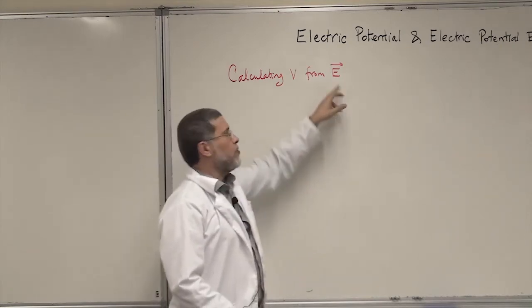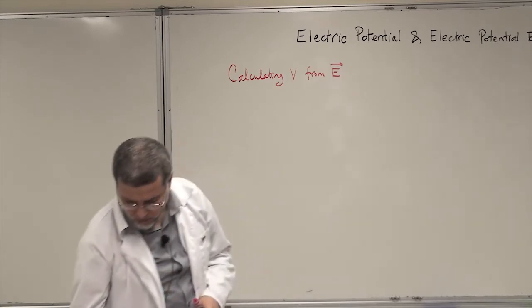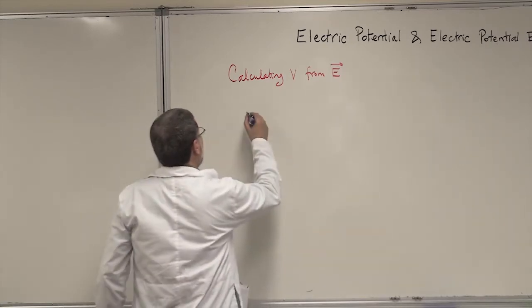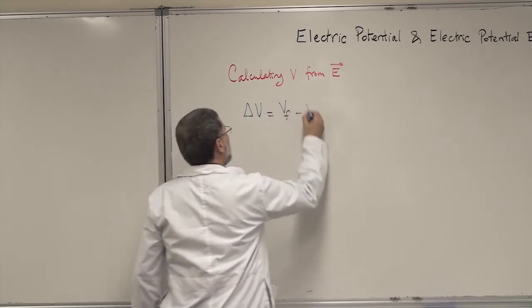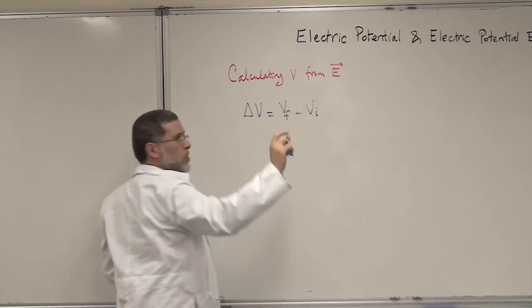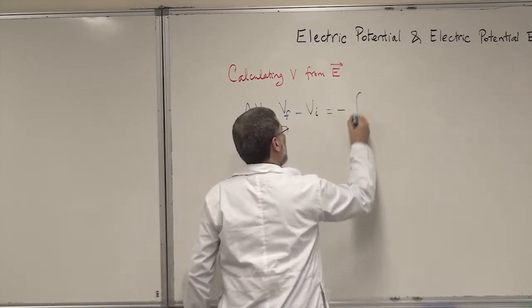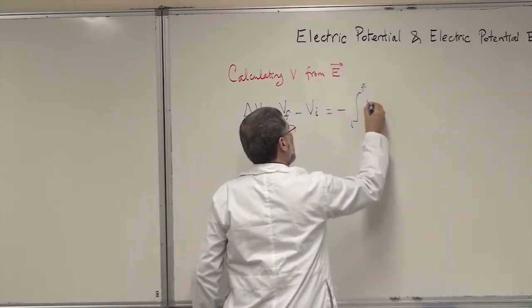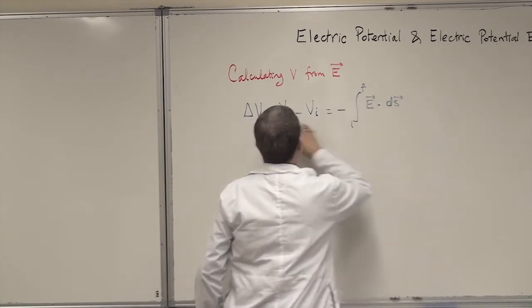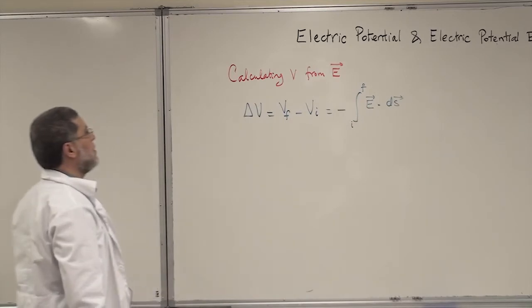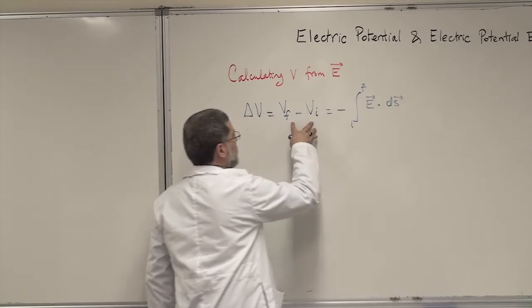How to calculate V from E. I hope you remember the equation I wrote for you previously: delta V, which is V final minus V initial — that's the potential between two different points in an electric field — is equal to minus the integral between I and F of E dot dS. This is the equation you have to use to calculate V from E. You are given E and you do the integration to find the potential.